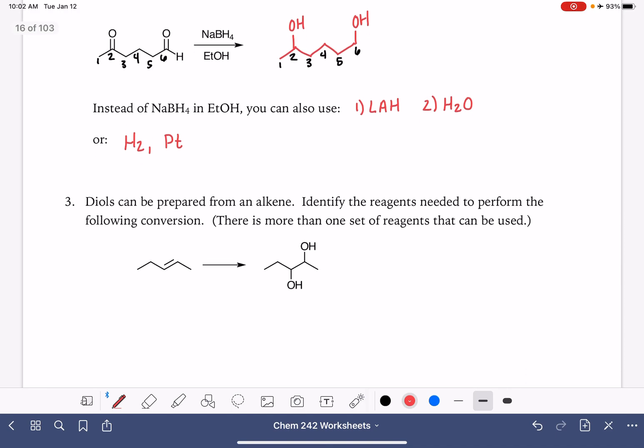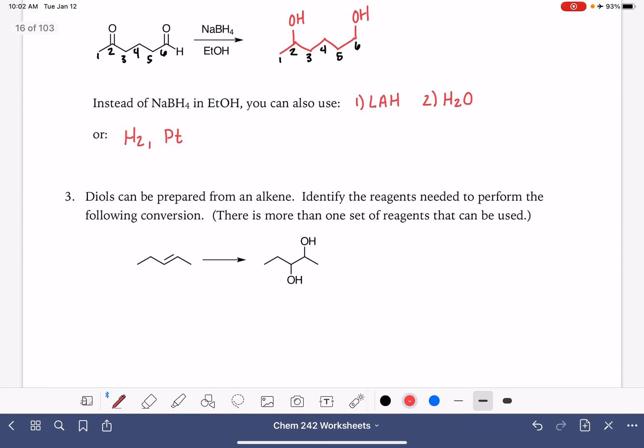In last quarter, we learned that we can make diols from an alkene. There are multiple ways that we could convert an alkene into a diol. My personal favorite is using MCPBA, which forms an epoxide, and then following that up with H3O+. Another really common set of reagents that you could use for this is cold potassium permanganate with hydroxide.